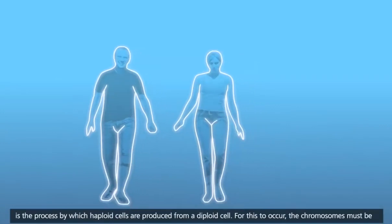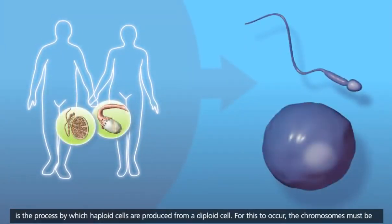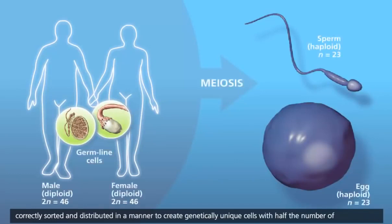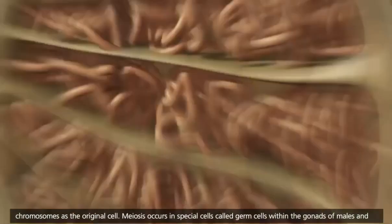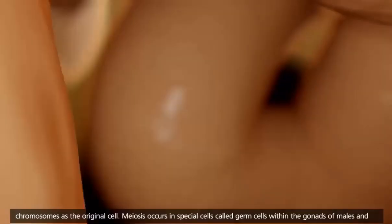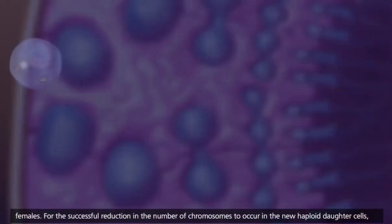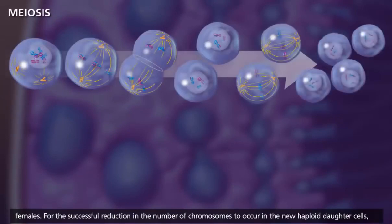Meiosis is the process by which haploid cells are produced from a diploid cell. For this to occur, the chromosomes must be correctly sorted and distributed to create genetically unique cells with half the number of chromosomes as the original cell. Meiosis occurs in special cells called germ cells within the gonads of males and females. For the successful reduction in chromosome number to occur in the new haploid daughter cells, two rounds of divisions are necessary.